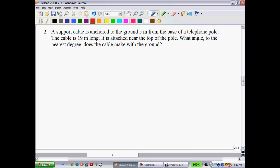All right, example two. Word problems you're going to see are fairly common in this unit. The reason is we're dealing with real-world type of issues, and trigonometry can help solve them, so you're going to have to get used to these. A support cable is anchored to the ground 5 meters from the base of a telephone pole. The cable is 19 meters long. It is attached near the top of the pole. What angle, to the nearest degree, does the cable make with the ground?